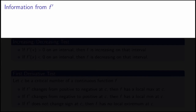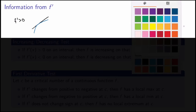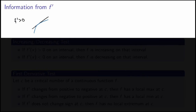If f prime is positive, it means that the tangent line has positive slope, and what that means for the function is that the function will be increasing. So whenever the derivative is positive, the function is increasing.